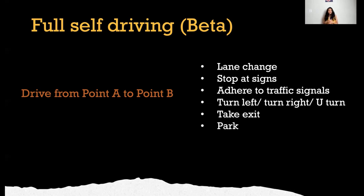If you compare human error-caused accidents versus car-caused accidents, there's a huge difference. A lot of people ask me that when a human is driving, a human may also make errors. But if a car is causing accidents, there are a lot of technicalities with respect to insurance — who takes the liability, how the victim will be covered. Insurance companies need to come together, make impact with vehicle companies, and change a lot of their policies to accommodate something like full self-driving. That's why it's taking time.